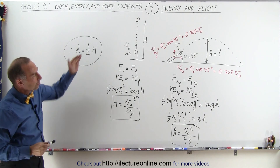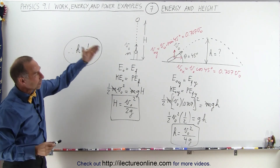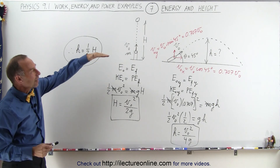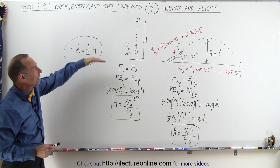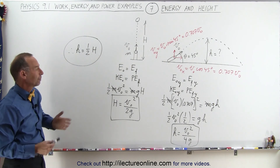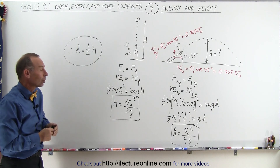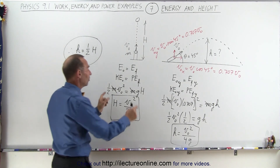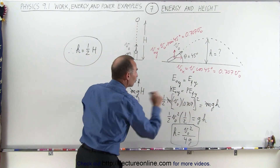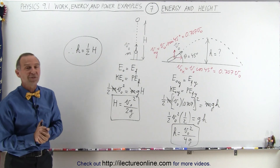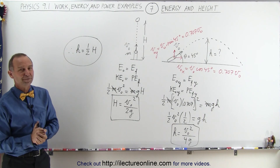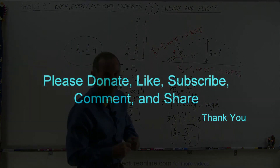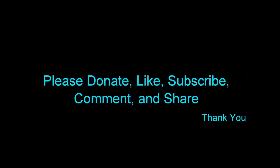In conclusion, h is equal to one-half the original height H achieved when shooting the cannonball straight up. In projectile motion at 45 degrees you only reach half the height you would gain shooting straight up, and this works for any projectile since the masses cancel out.